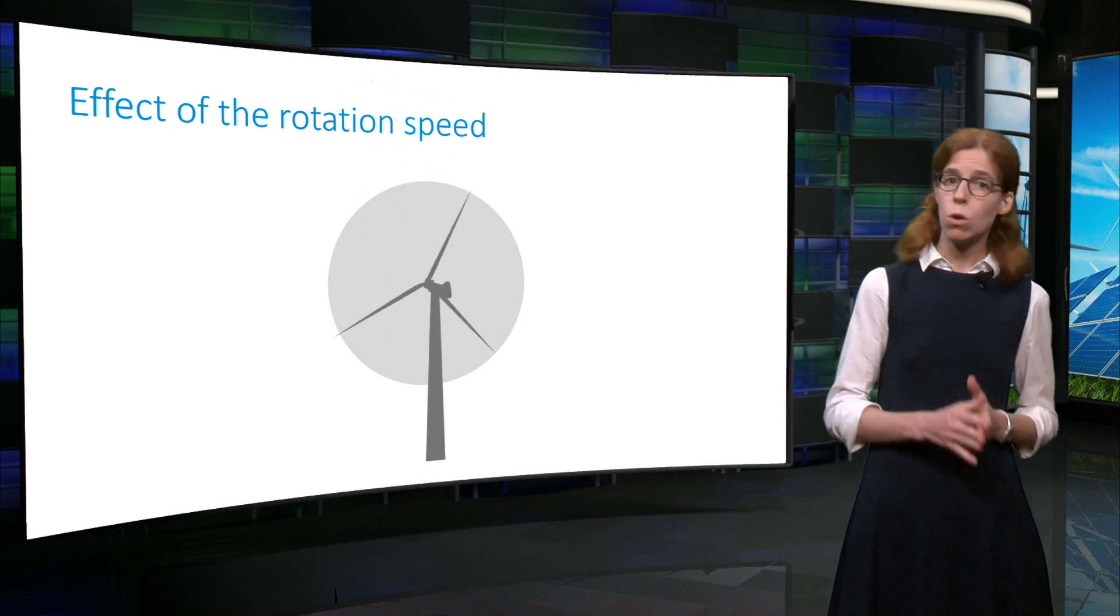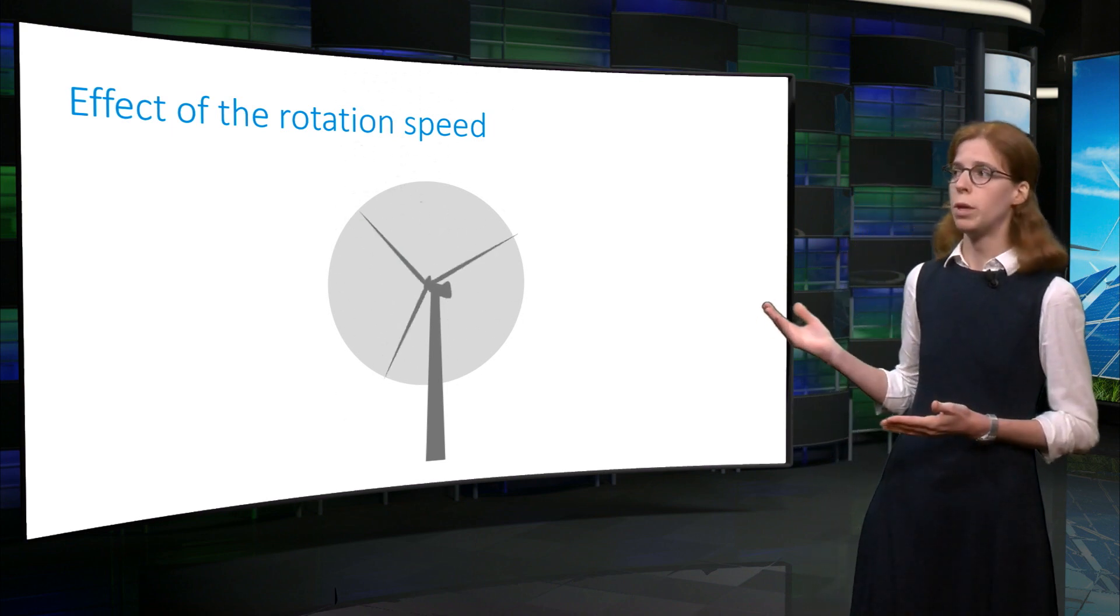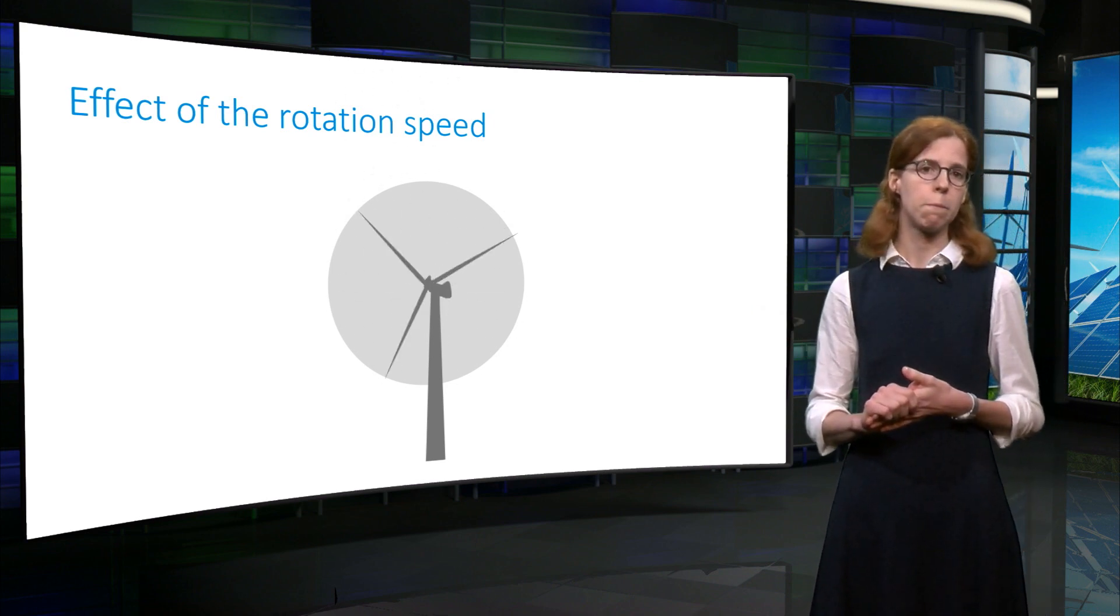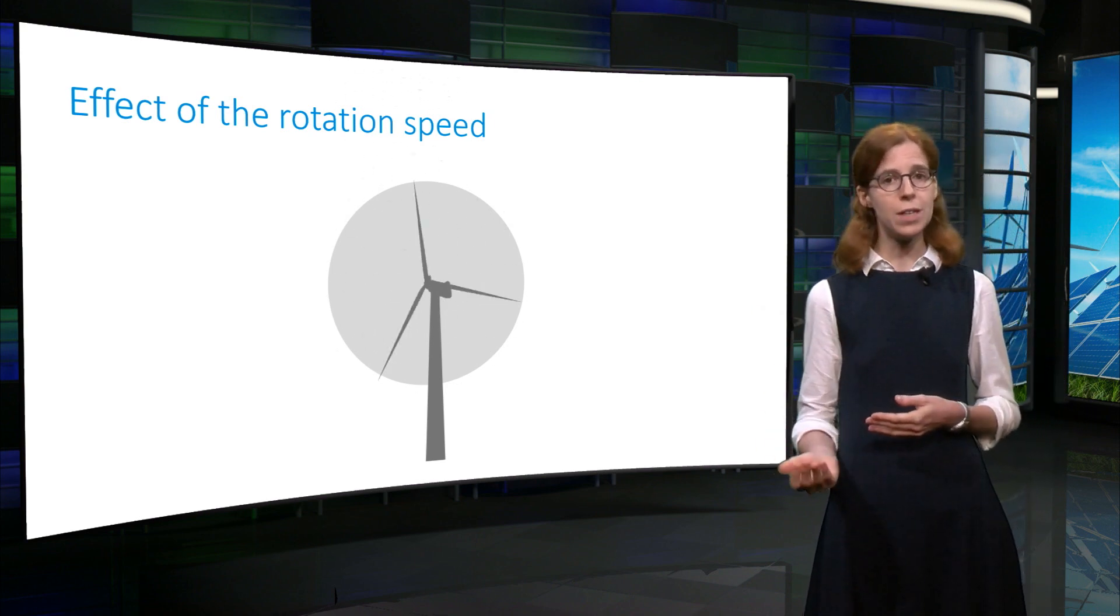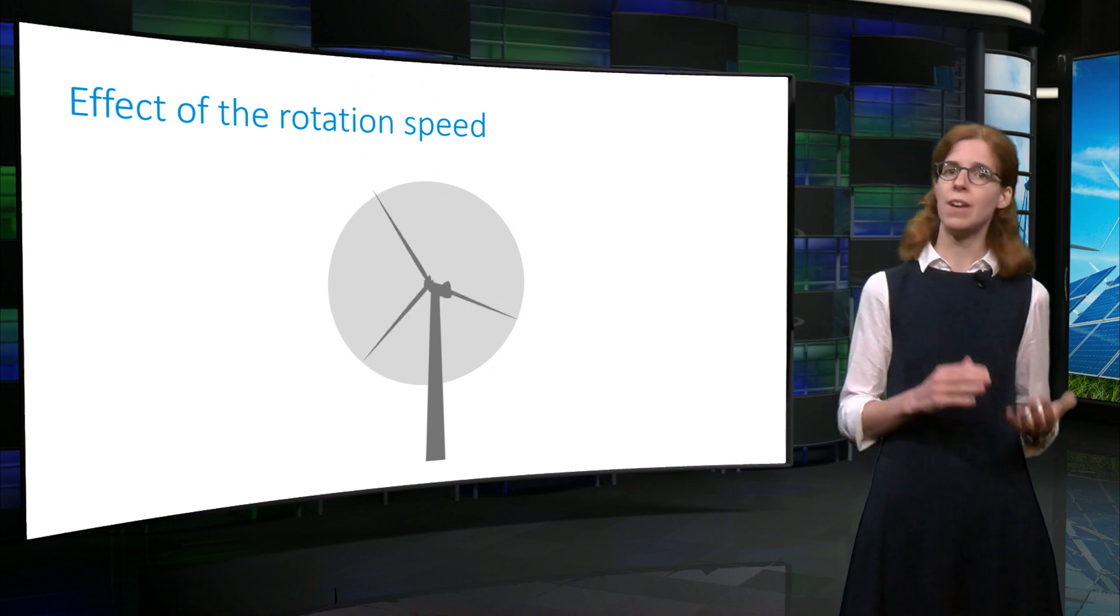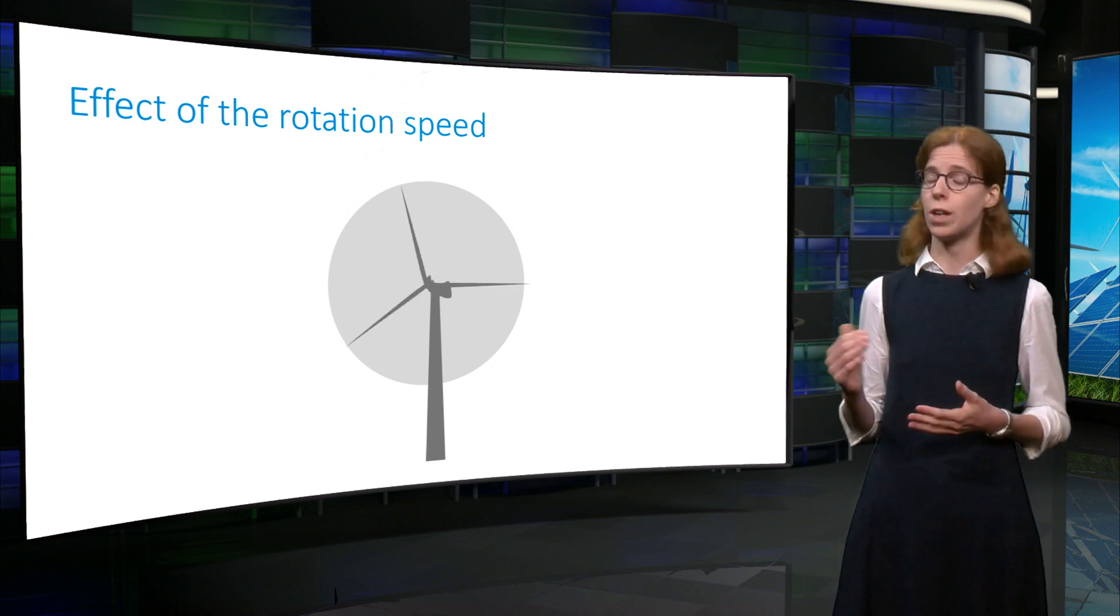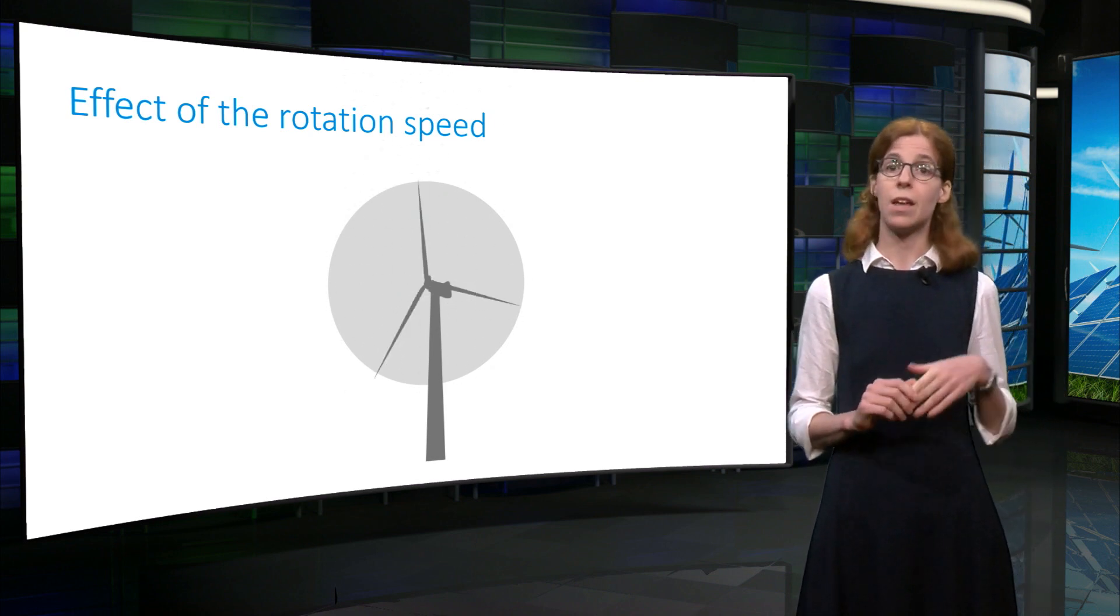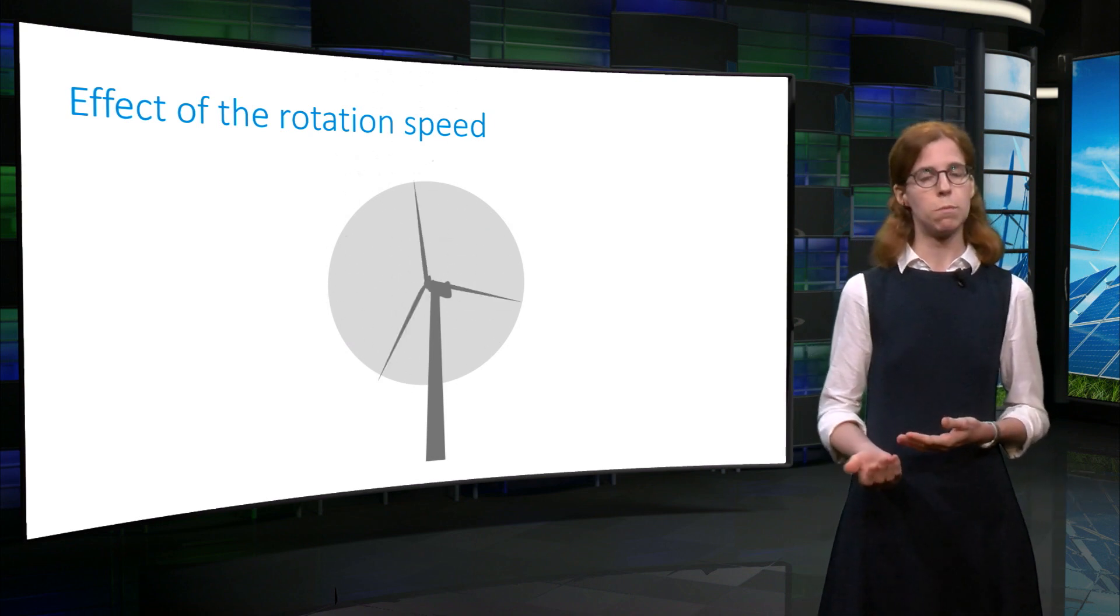At very low rotational speed, the flow sees three blades spinning. But as the rotational speed increases, the flow sees effectively a rotor with more than three blades. Therefore, less wind will go through, resulting in less power.